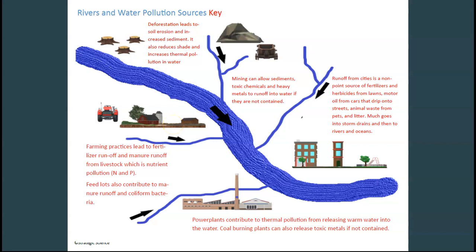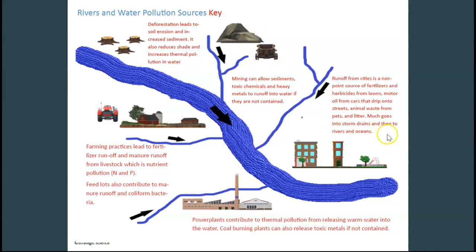Let's go over the different parts of how rivers and streams can get water pollution, and if you are close enough to an ocean it can empty all these things into the ocean. We're going to zoom in on some of these things here. We have deforestation, we have mining, we have a city, we have a power plant, and we have farming. Let's go ahead to the next slide to zoom in.